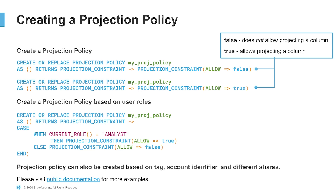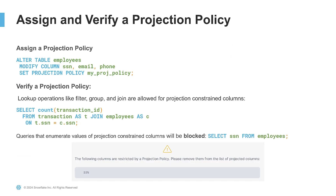In this example, based on user roles, when the current role is evaluated to analyst, columns will be allowed to be projected. Otherwise, all other roles will not see that column. Other criteria for projection policies can be tags, account identifiers, and other shares of data. The documentation is linked here. Once you've created the policy, simply run an alter table statement specifying the columns that should not be projected. When you run a query with a projection policy on that table, you can do aggregations, filters, group bys, and joins on those columns, but you cannot see that column in a query. In the first query, you would see the number of transaction IDs based on social security number. But in the second query, where you simply run a select statement for SSN, you cannot see that column since it is projection-constrained.